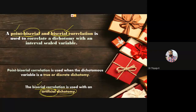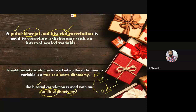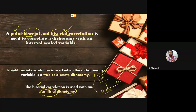For biserial we need one continuous variable and one dichotomous variable, but that dichotomous should be artificial. For point biserial, the dichotomous variable should be natural — like male and female or rural and urban.